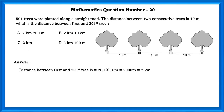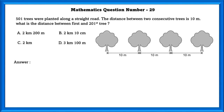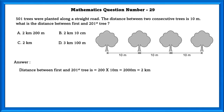Mathematics question number 29. 501 trees were planted along a straight road. The distance between two consecutive trees is 10 meters. What is the distance between the first and 201st tree? Distance equals 200 into 10 meters, which is equal to 2,000 meters, which equals 2 kilometers.